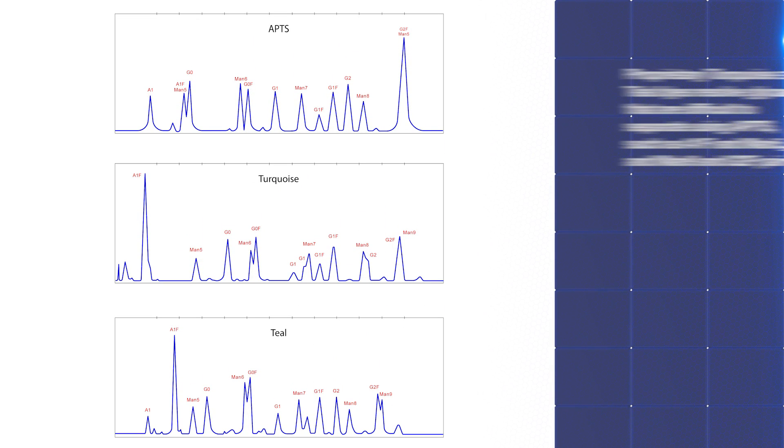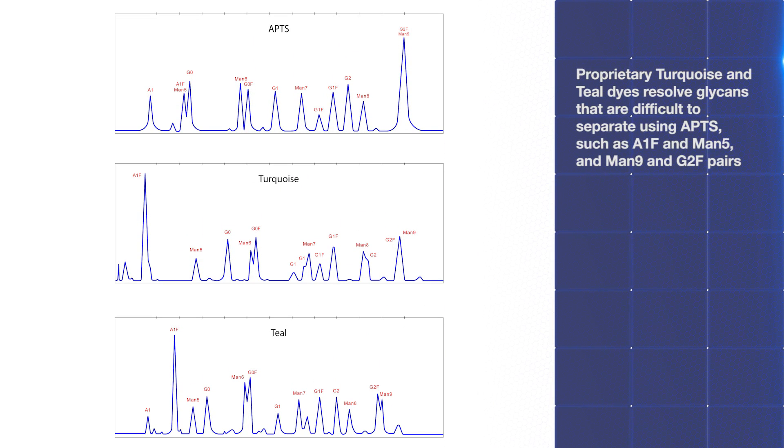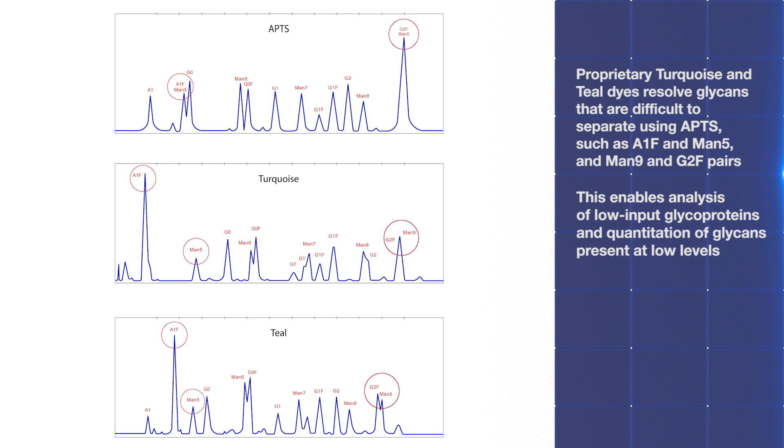Our proprietary turquoise and teal dyes resolve glycans that are difficult to separate using APTS, such as A1F and MAN-5 and MAN-9 and G2F pairs. This enables analysis of low input glycoproteins and quantitation of glycans present at low levels.